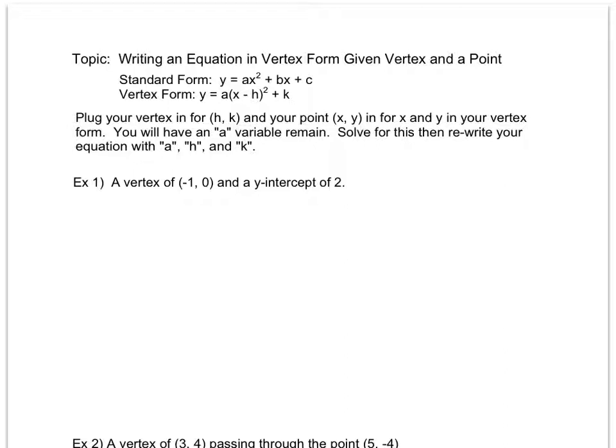Going through that process on example one, I'm given a vertex, so I'm given an h comma k value, and I'm given a y-intercept. Remember, a y-intercept is a point. It's a point where I'm on the y-axis, and if I'm on the y-axis, notice I have gone left or right zero. So when they give me the y-intercept, they're essentially giving me the point zero two.